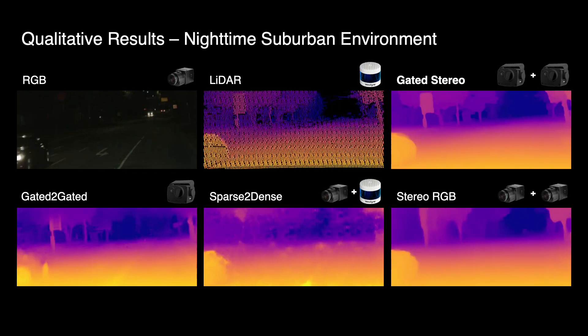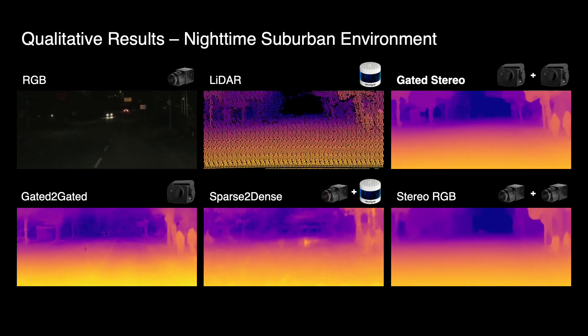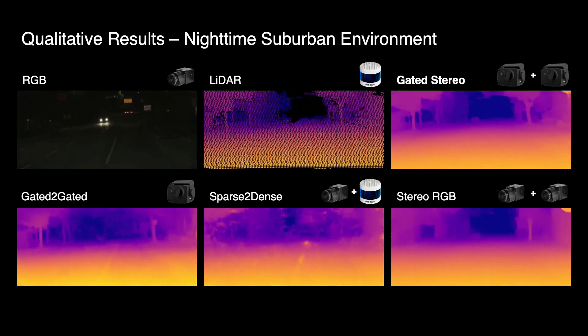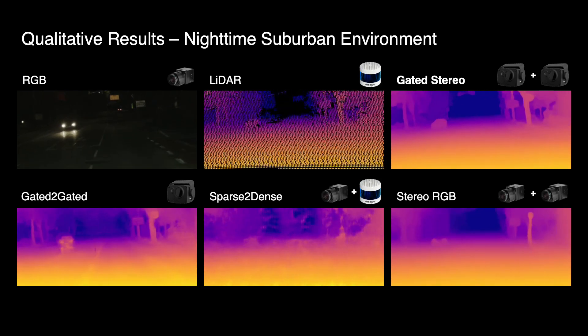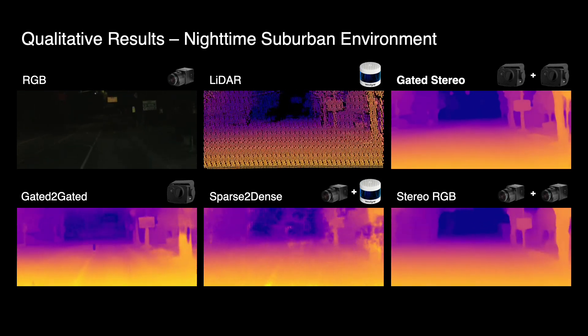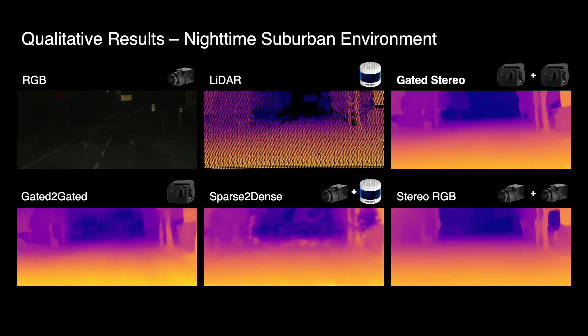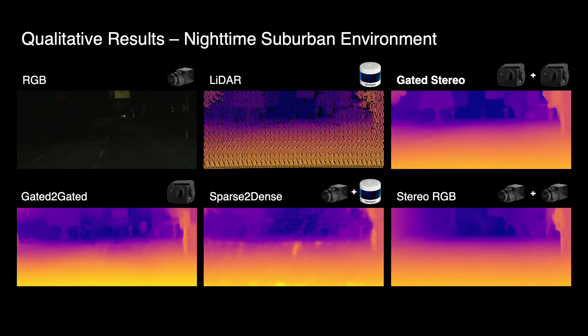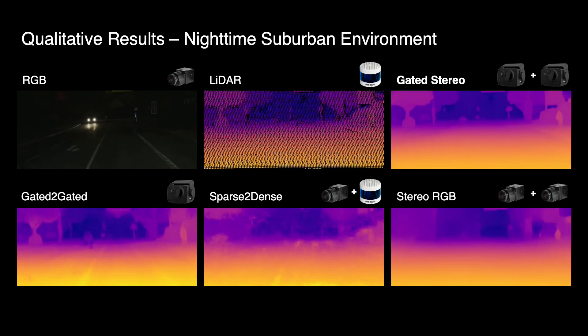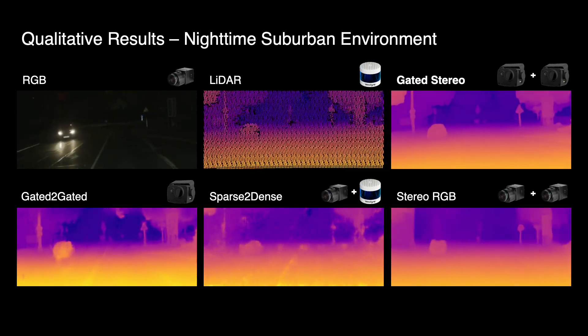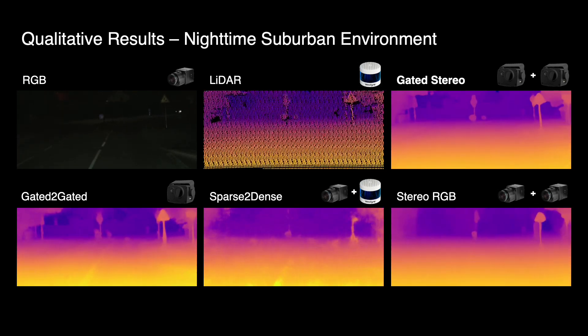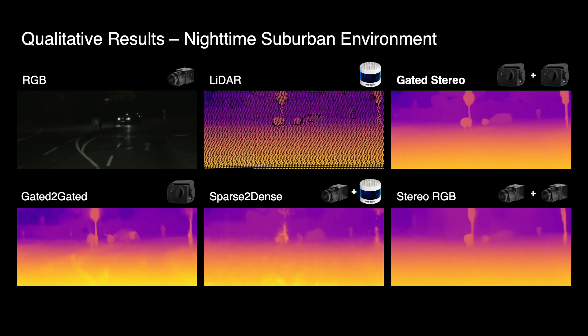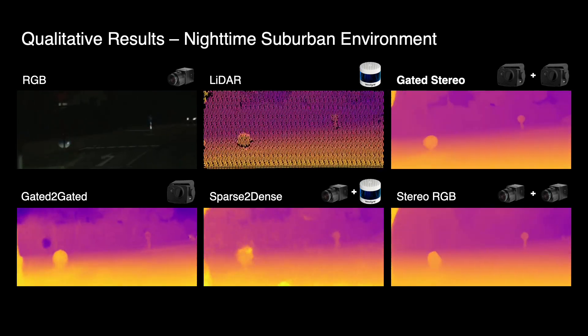While the gated-only method gated-to-gated suffers from multipath and shadowed areas, sparse-to-dense is not capable of interpolating plausible depth maps. For RGB stereo it is difficult to provide consistent depth maps for far distances due to the lack of finding stereo correspondences in darkness. In contrast, gated stereo is able to recover fine details including thin poles as a result of the structure-aware refinement achieved via the monocular depth branches.